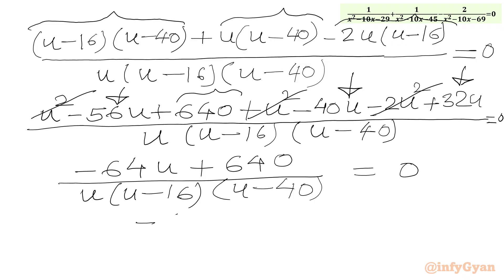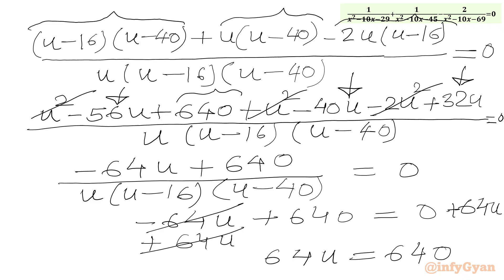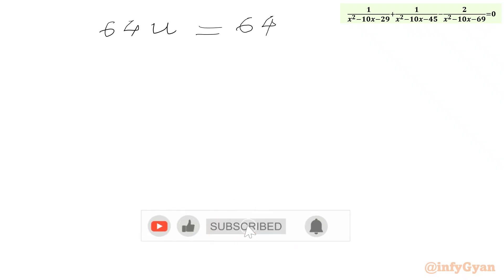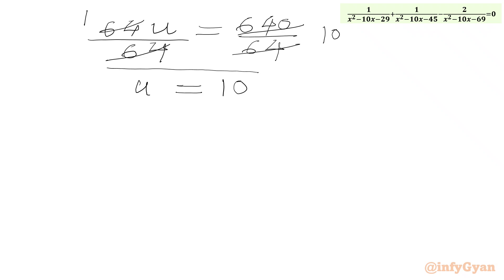From here we can write -64u + 640 equals 0. Adding 64u to both sides gives 64u = 640. Dividing both sides by 64, we get u = 640/64, which equals 10. So the value of u is 10.